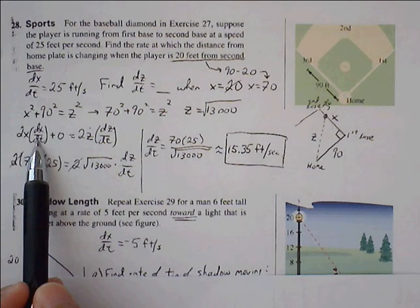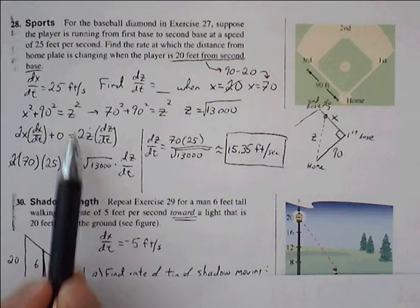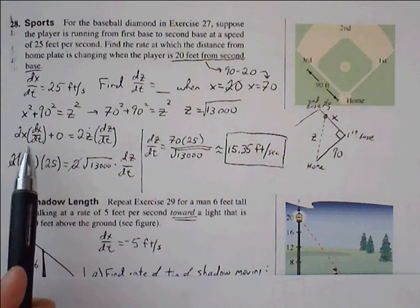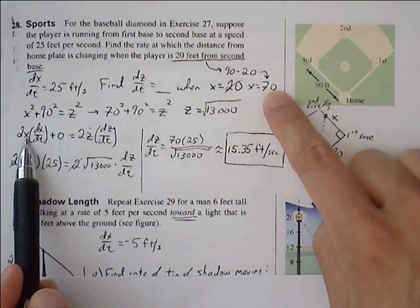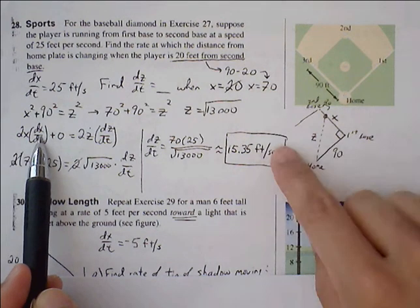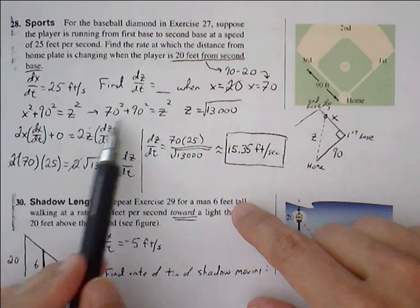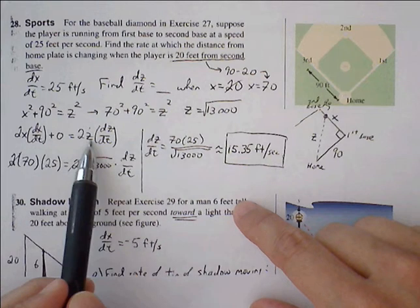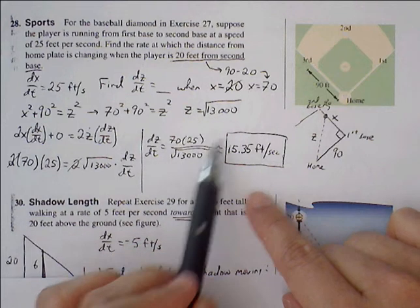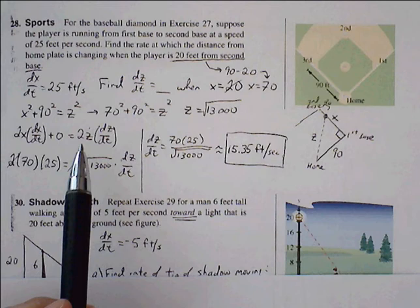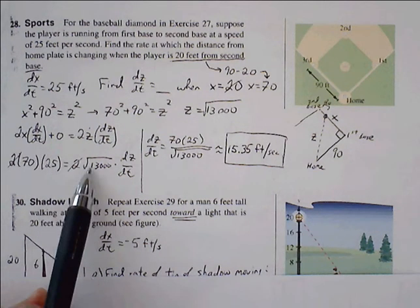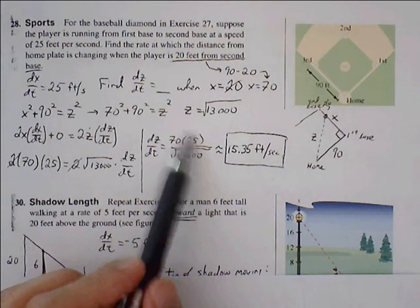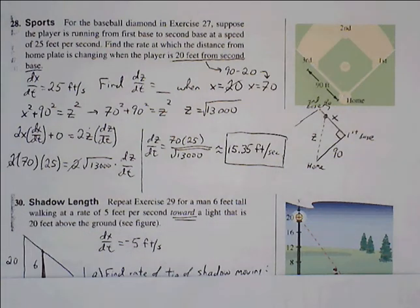Now we find the derivative: x² becomes 2x·(dx/dt), 90² is constant so it goes to 0, and z² becomes 2z·(dz/dt). Substituting x = 70, dx/dt = 25, and z = √13,000, we solve for dz/dt by dividing both sides by 2√13,000. Using our calculator, the rate of change of the distance between home plate and the base runner is approximately 15.35 feet per second.